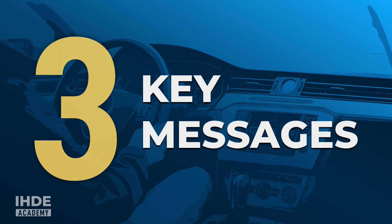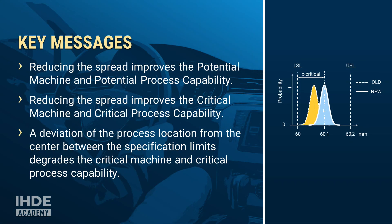That was a lot of new information. To conclude, here are the three most important key messages: First, reducing the spread improves the potential machine and potential process capability. Second, reducing the spread also improves the critical machine and critical process capability. Third, a deviation of the process location from the center between the specification limits reduces the critical machine and critical process capability.